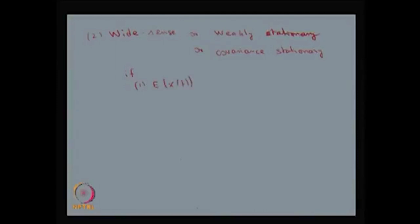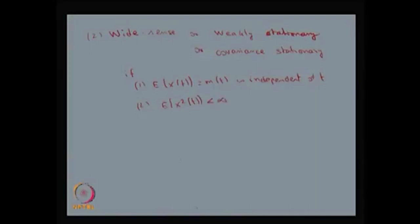The first condition: the mean function M of T is independent of T. The second condition: the second order moment is finite — basically, the second order moments of the stochastic process are finite.